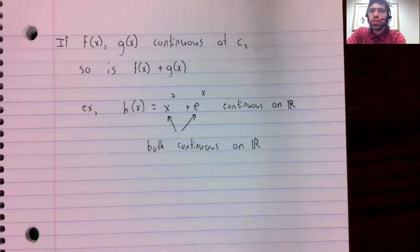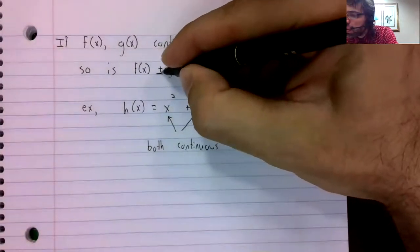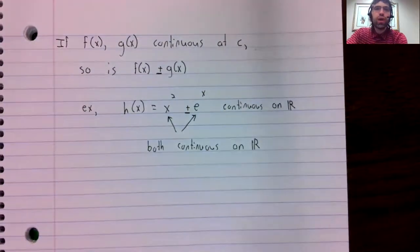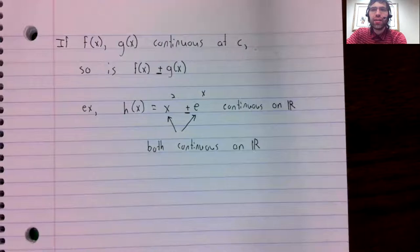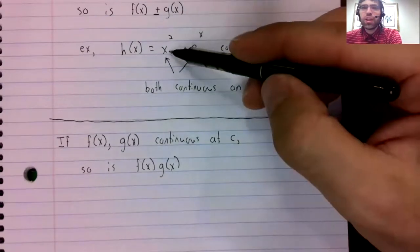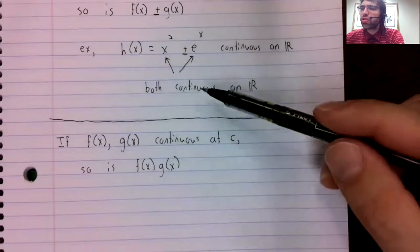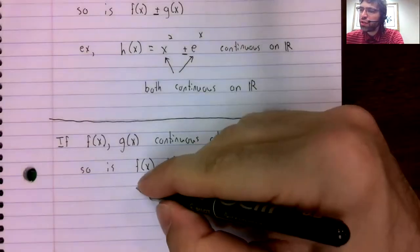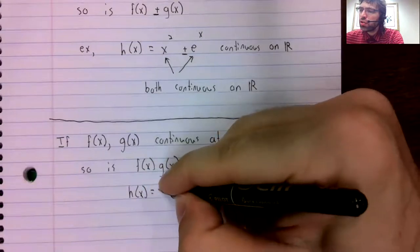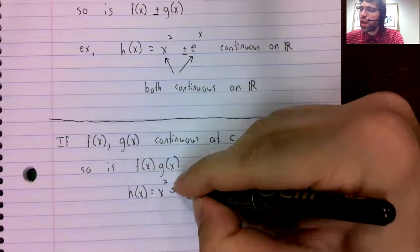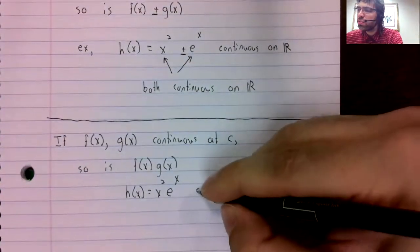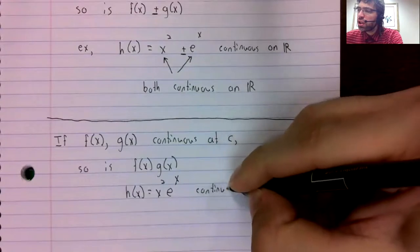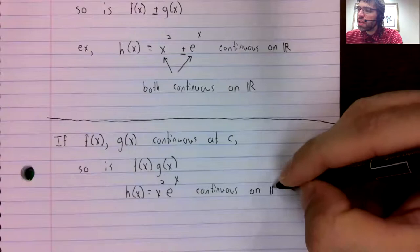Subtraction similarly, in fact let me just turn this plus into a plus or minus sign. Multiplication also has this property. Keeping with these two functions, x squared is continuous everywhere, e to the x is continuous everywhere. So x squared times e to the x is continuous everywhere.